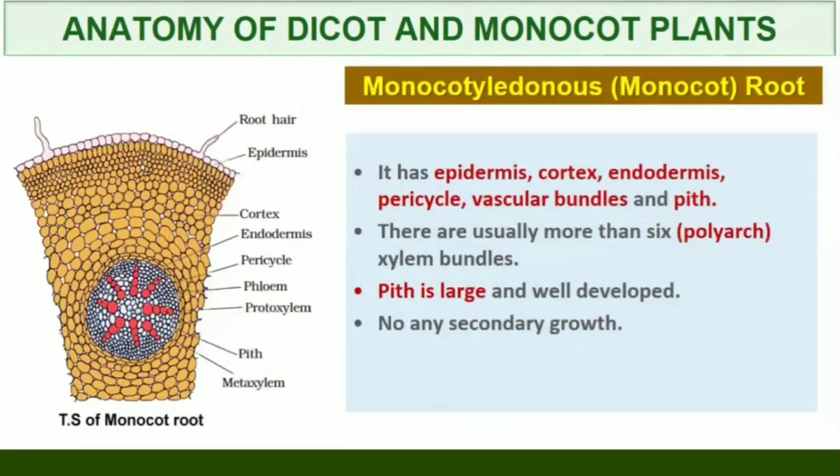Monocotyledonous Root. The anatomy of the monocot root is similar to the dicot root in many respects. It has epidermis, cortex, endodermis, pericycle, vascular bundles, and pith. As compared to the dicot root which has fewer xylem bundles, there are usually more than six polyarch xylem bundles in the monocot root. Pith is large and well developed. Monocotyledonous roots do not undergo any secondary growth.